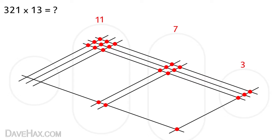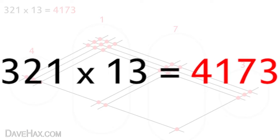So again we leave the last digit there, carry the first digit over to the next zone and add it to the dots. 1 2 3 plus 1 gives us 4. 4 1 7 3. So our answer 321 times 13 is 4173.